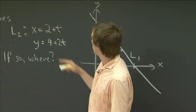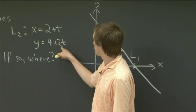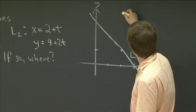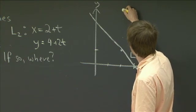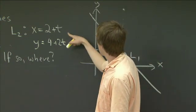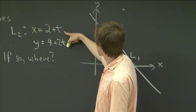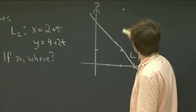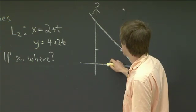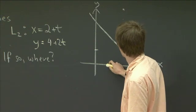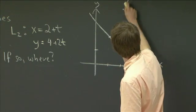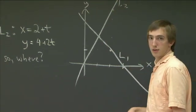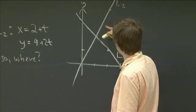Now for L2: if we plug in t equals 0, we get (2, 1, 2, 3, 4). And if we plug in t equals minus 1, then we get (1, 2). So there's L2. And indeed, it does look like they intersect.